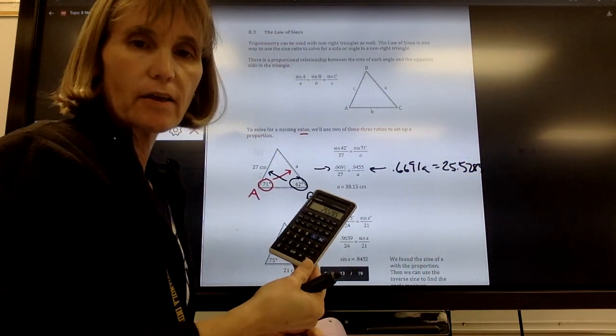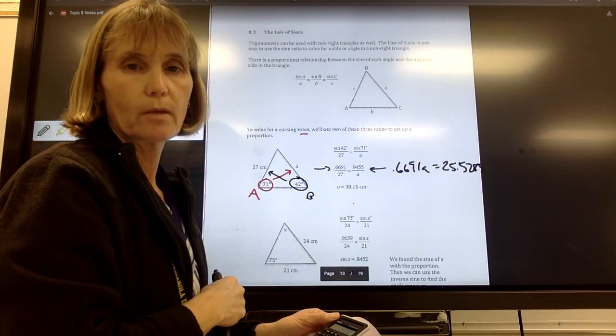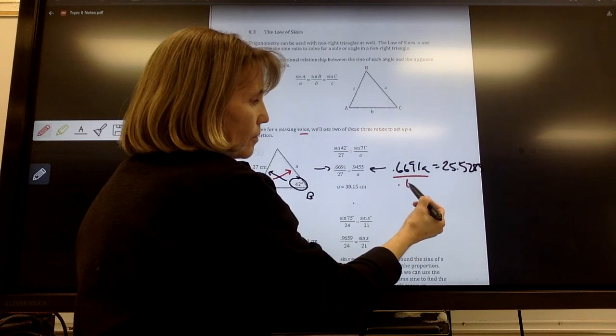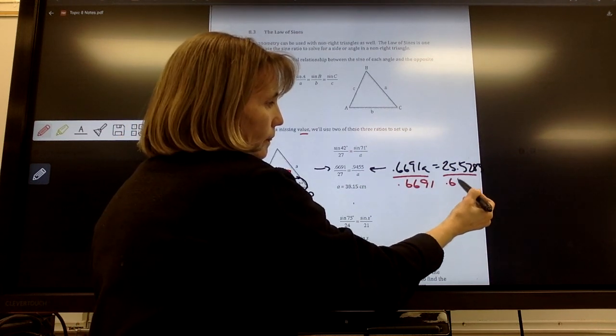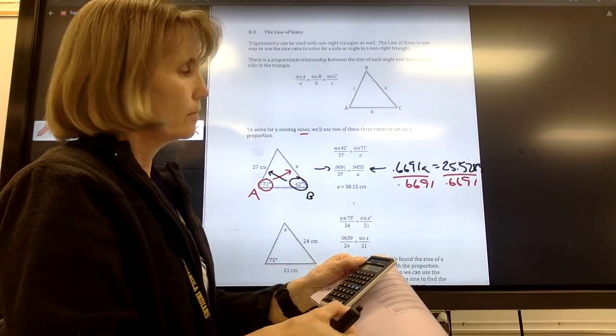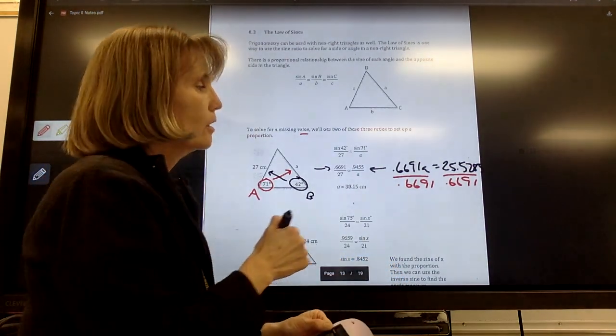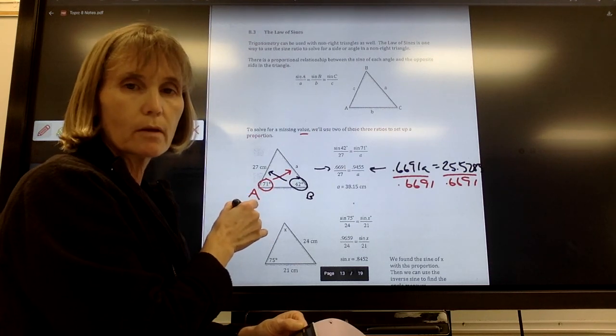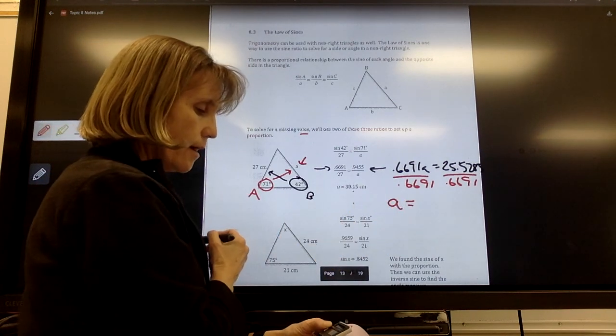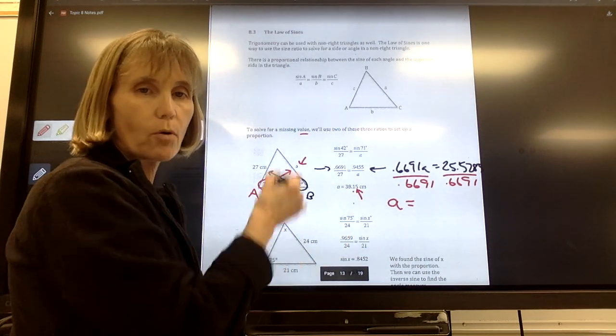Now, I'm going to just leave that number on my calculator. Don't erase it. Just leave it there. What's the next step in solving that equation? The next step, we're trying to get A by itself, so we're going to divide by that decimal. So I'm going to leave that on my calculator. I'm not going to round it. I'm just going to hit divided by 0.6691. That answer is the one I'm going to round. Now, what are we missing here? What are we solving for? We're solving for a side length. That is a side length. So again, we're going to round to the nearest tenth. So I have 38.15. Does that 5 make the 1 stay or go up?